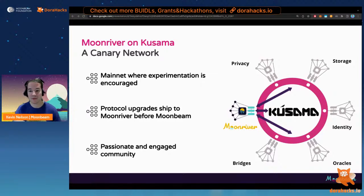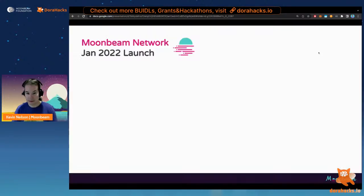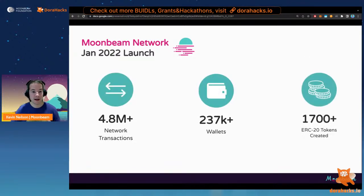On the diagram we can see that Moonriver is a layer-one parachain on Kusama — it's a layer-one blockchain. Moving on to network statistics: statistics don't tell the whole story but they are part of it. Moonbeam launched in January 2022, and since then there have been almost 5 million transactions on the network, 237,000 wallets, and 1,700 ERC20 tokens created.